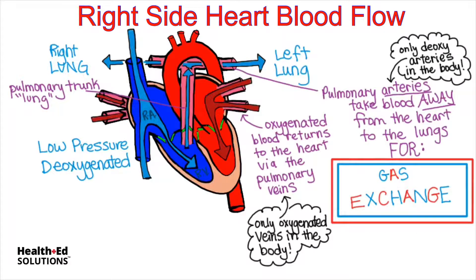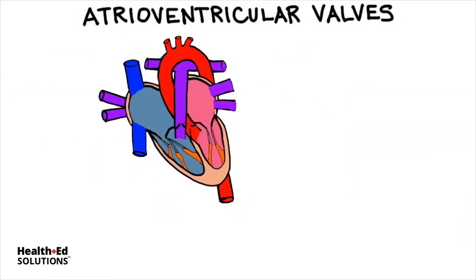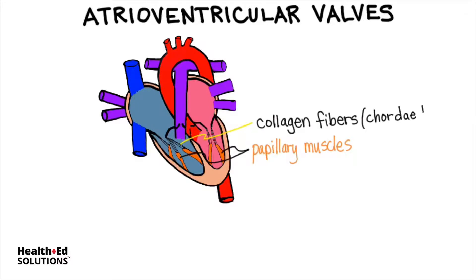So when the ventricles pump, blood should be pumped up through the great arteries — the aorta on the left side and the pulmonary trunk on the right side. However, how come the blood does not go back right up into the atria where it just came from? This is where we see the value and importance of valves. Each ventricle has strong carrot-shaped muscles called papillary muscles. These papillary muscles are attached to strong collagen fibers that we call the cordae tendinae, forming a strong connection.